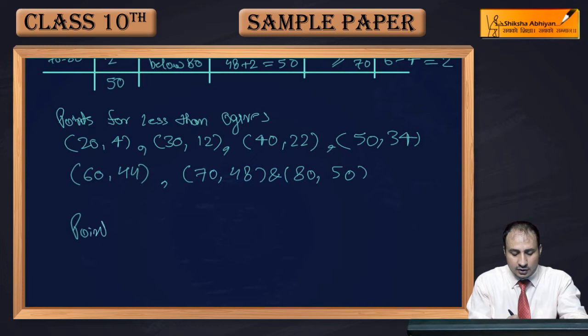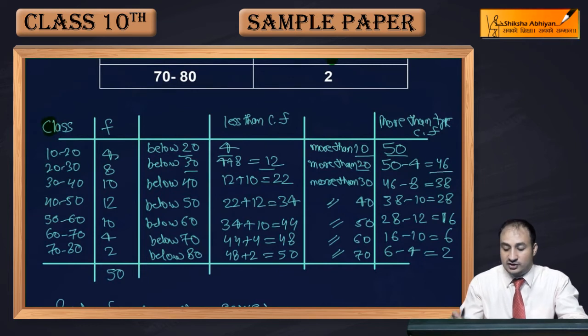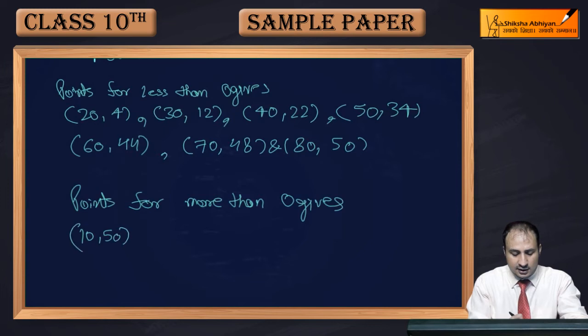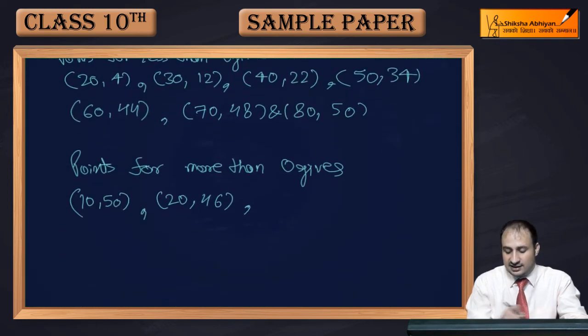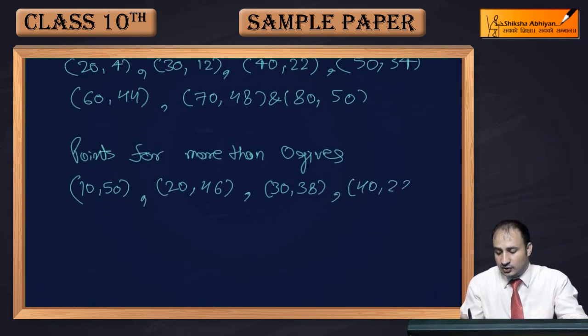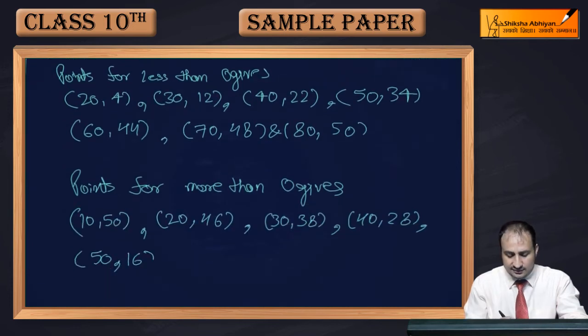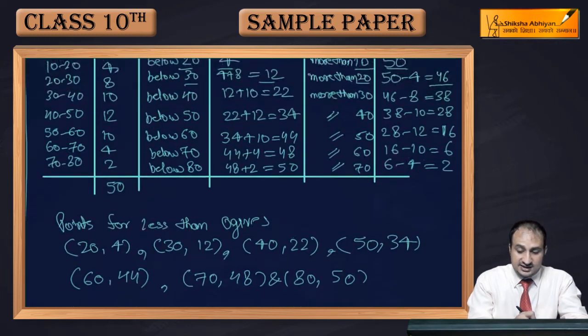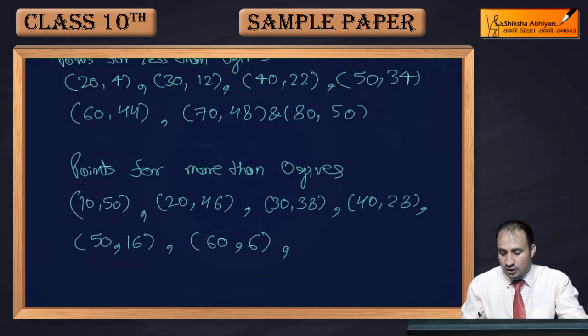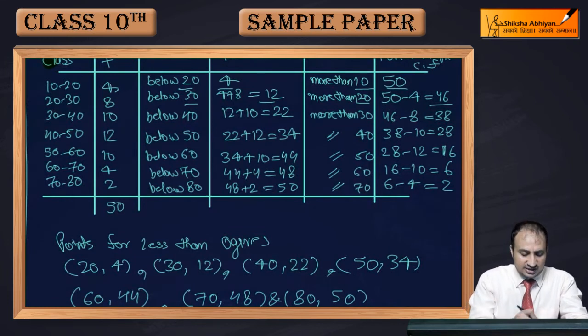Now points for more than ogives. For more than ogives, now you have to write the points. Those points will be 10 comma 50, 20 comma 46, then after that 30 comma 38, then after that 40 comma 28, then after that 50 comma 16, and after that 60 comma 6, and after that 70 comma 2. So now all these points are obtained, less than and more than ogives. You will draw them.